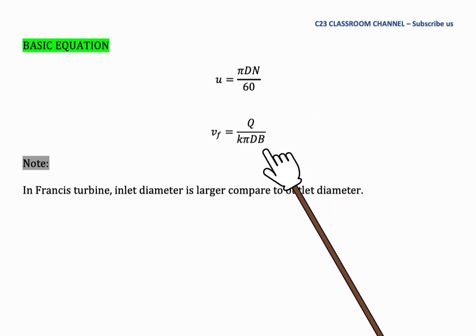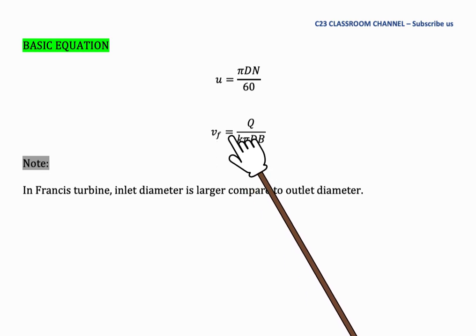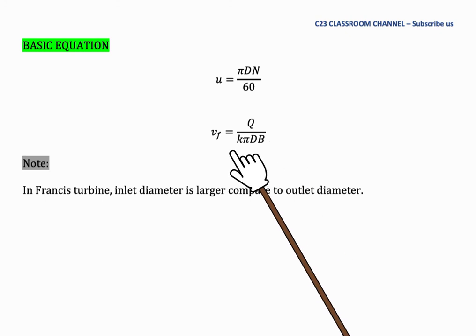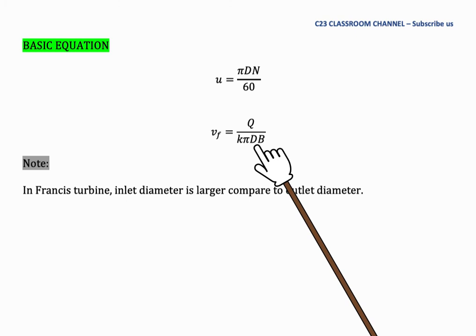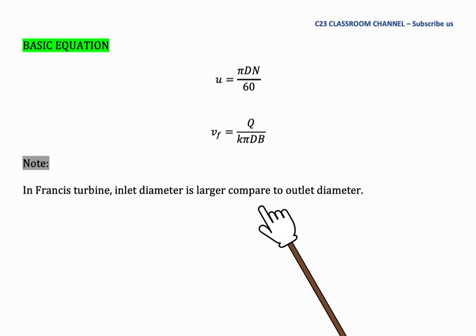And equation number two is flow velocity. We have Vf equal to flow rate Q over the area. If you want to calculate Vf1, you need to use diameter for point number one and blade width at point number one. And please remember that in Francis turbines, inlet diameter is larger compared to the outlet diameter.